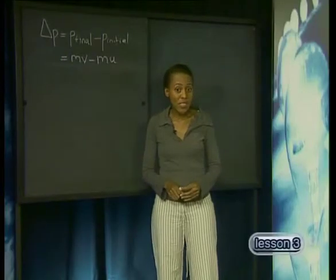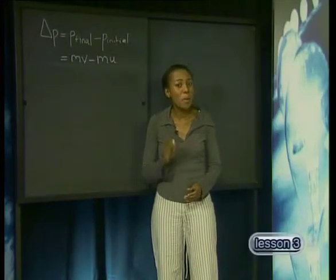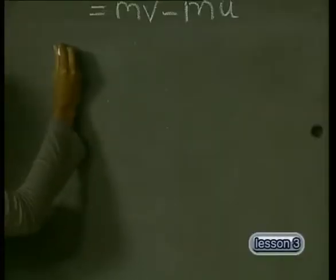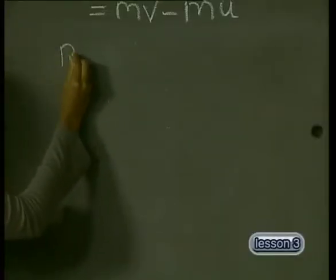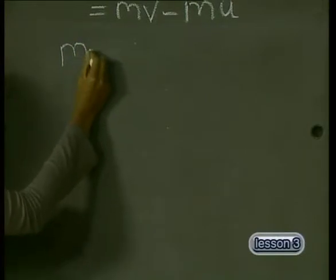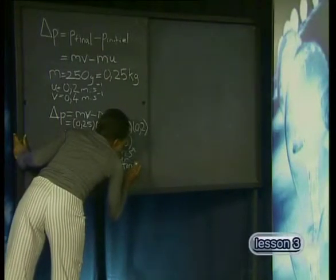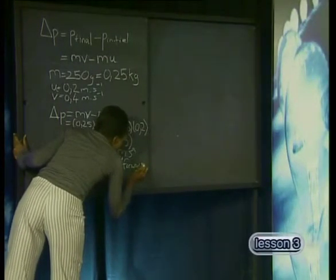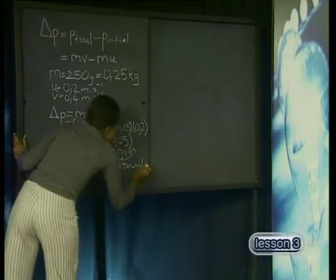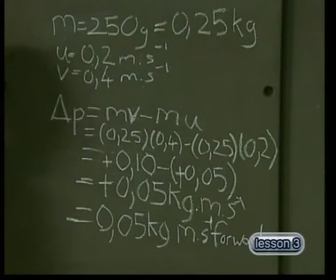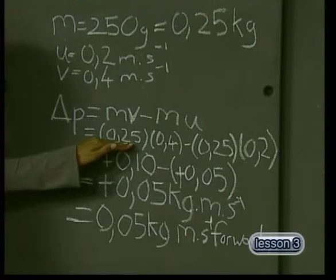What is the car's change in momentum? The change in momentum is the final momentum minus the initial momentum. The final momentum is the mass of the car, which is 0.25 kilograms, times its final velocity.